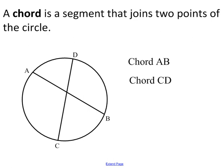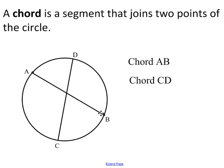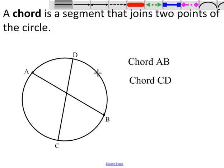So first, let me give you the definition of a chord. A chord is a segment that joins two points of the circle. So here we have chord AB — it's a segment that joins two points of the circle, joining this point and this point. So we call that chord AB right over here. We also have chord CD over here. So a chord is just a segment that joins two points of a circle.